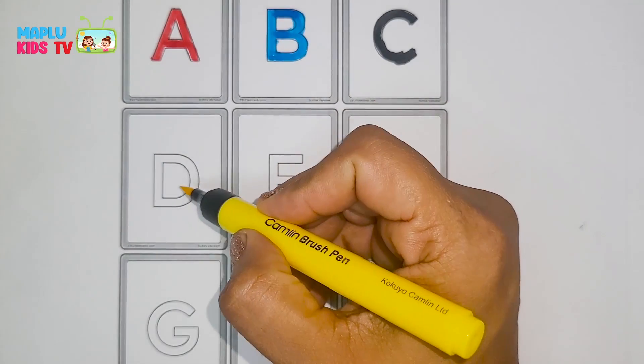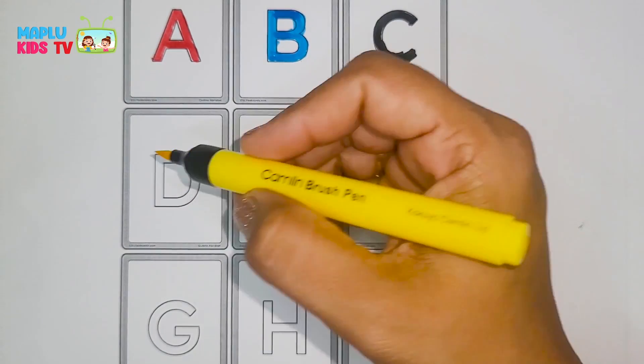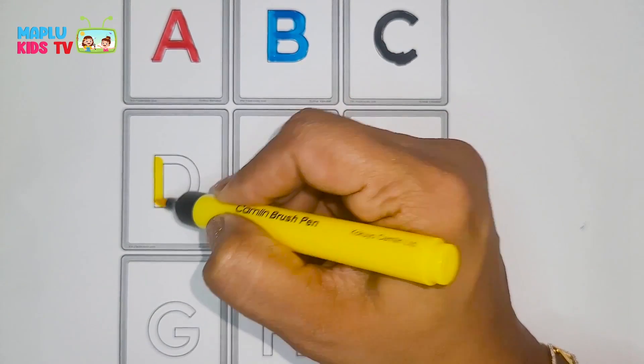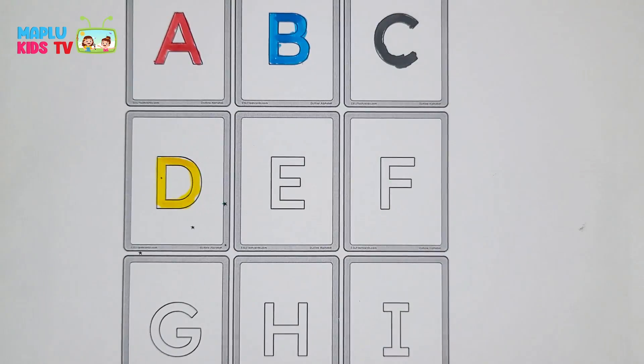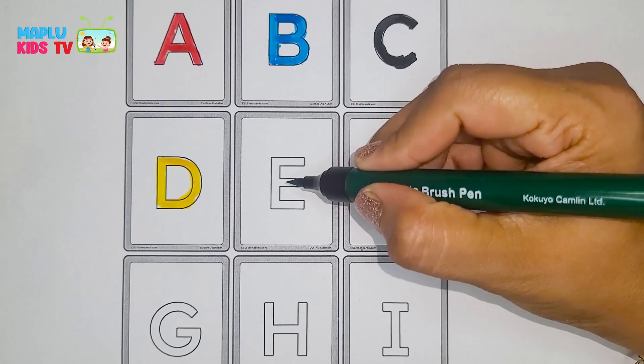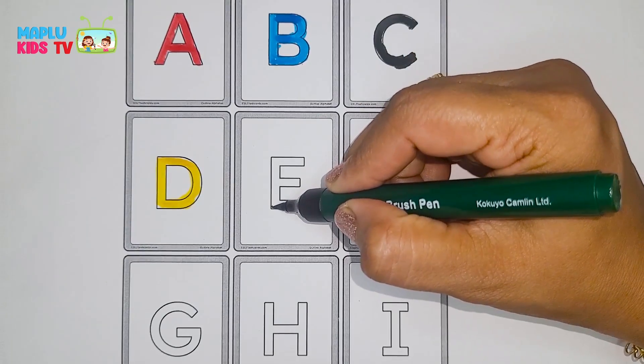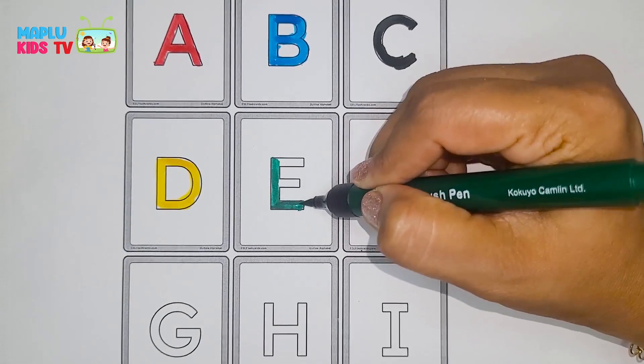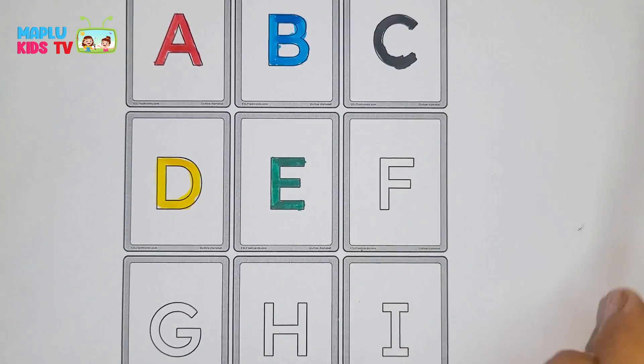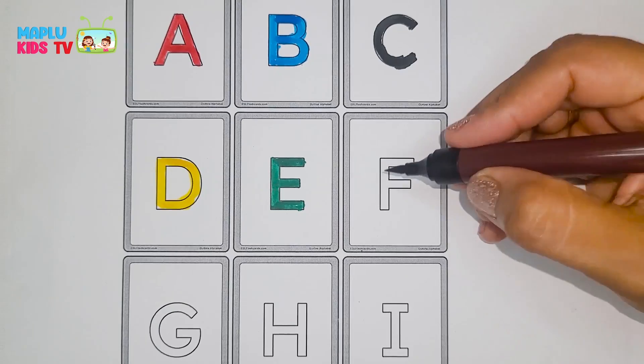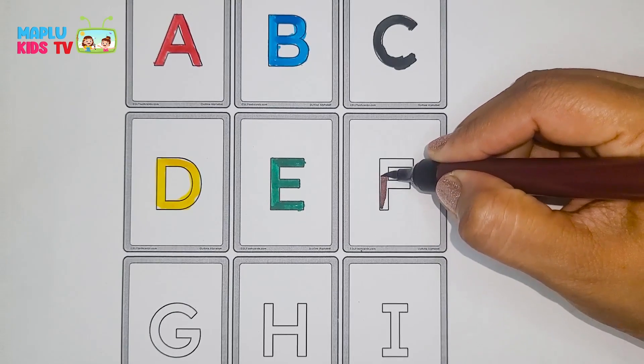This is D. D for dog. Now E. E for eye. This is F. F for fish.